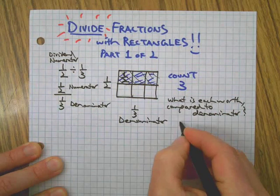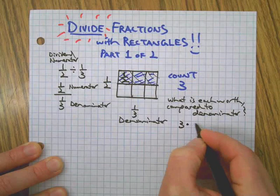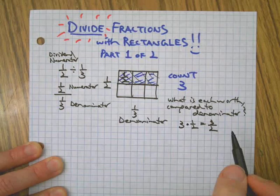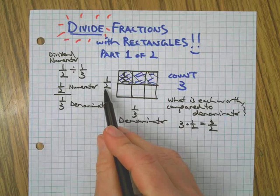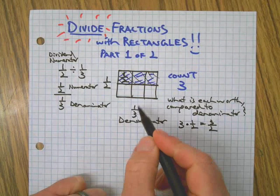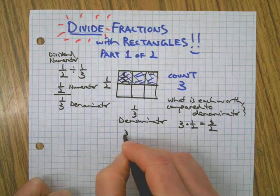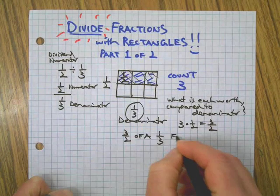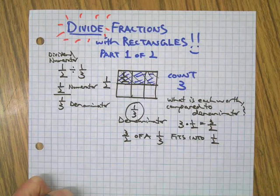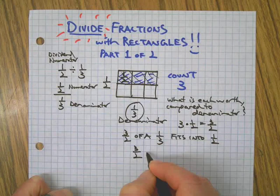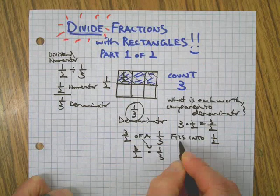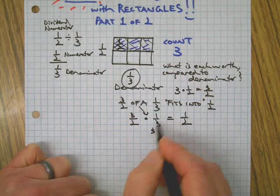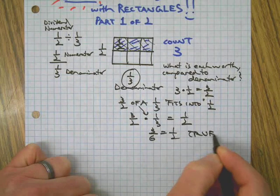So three of these one-halves, or three-halves, fit into one-half. Three-halves of a one-third fits into a one-half. This is our proof. Three-halves of means multiply, fits into means the equal sign. That's true, isn't it? Multiply straight across. Three-sixths equals one-half. That's true.